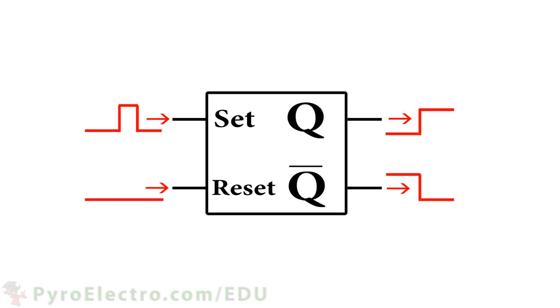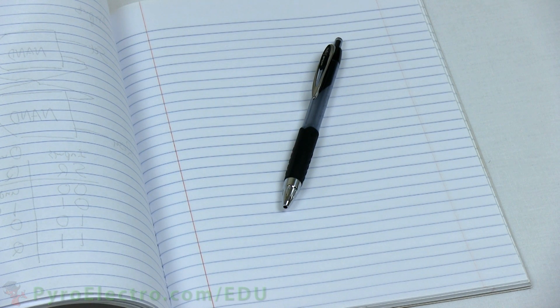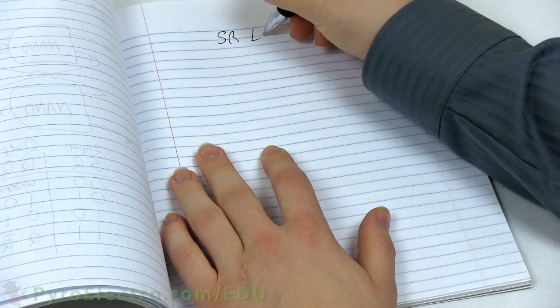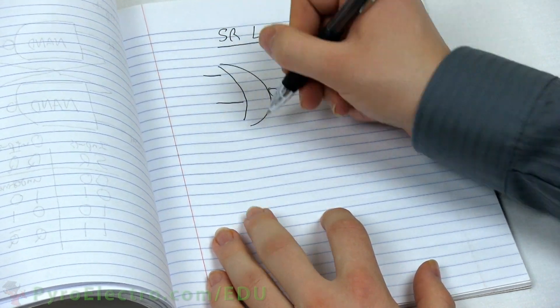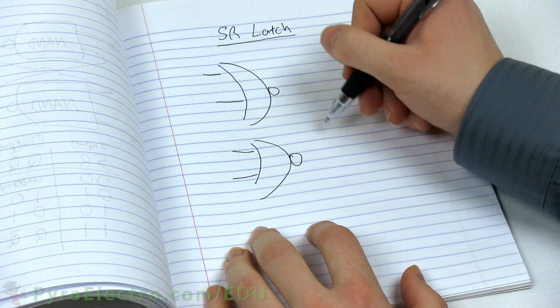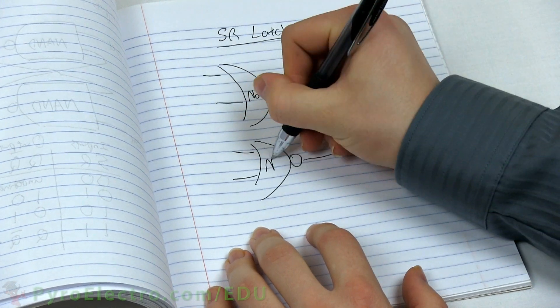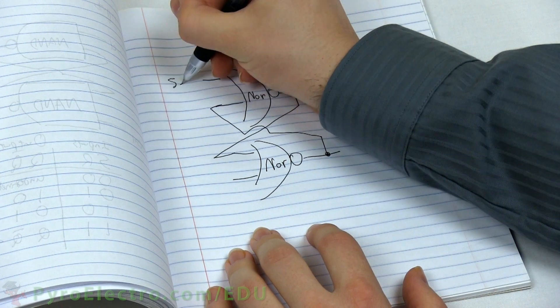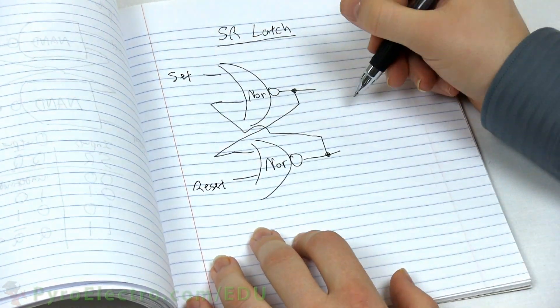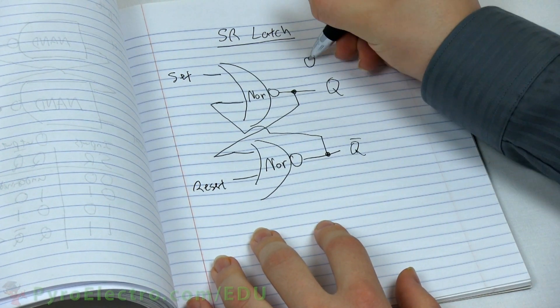The first latch we're going to look at is the simplest of them all. It is called the SR LATCH. There's two different ways to build an SR LATCH. The first way is to use two NOR gates with two inputs. One input feeding to each NOR gate, and then connecting the second input on each NOR gate to the output of the opposite NOR gate. A little confusing, no?